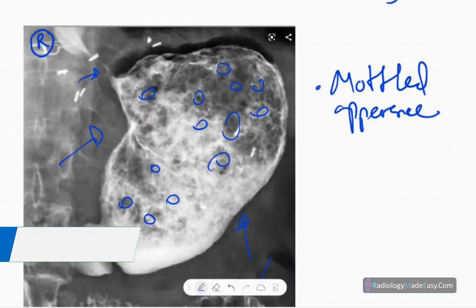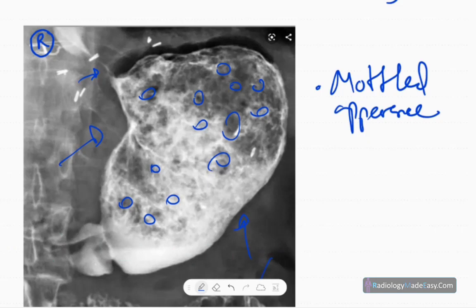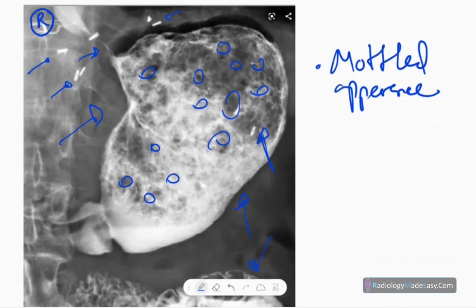No leakage of contrast, no fistula tracts, and you see some linear opacities here. So there's evidence of previous surgery in this patient. No bone abnormalities.